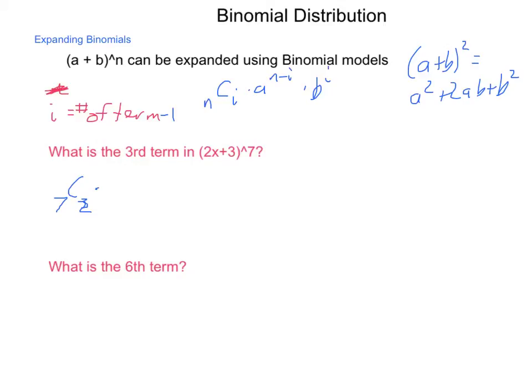n choose i, if we are looking for the third term, it will be 7 choose 2, one less than the number of term, times our A value, which is 2X, to the n minus i, so 7 minus 2, which is 5, times our B value, which is simply 3, to the i value, that's 3 squared. When we go through and expand this out, 7 choose 2 is 21. We multiply that by 2 to the 5th is 32, so we have 32X to the 5th, times 3 squared is 9. Multiplying the numbers on this will give us 6048 X to the 5th.